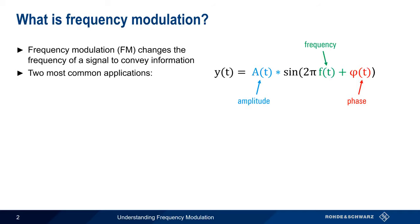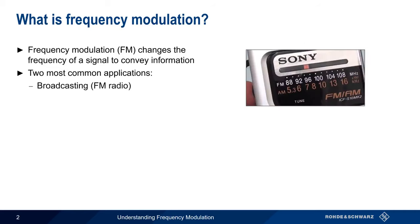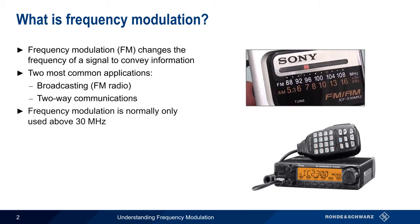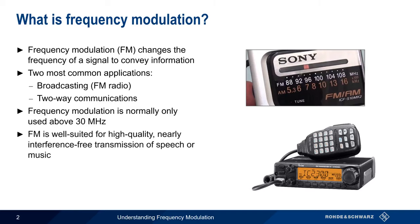The two most common applications of frequency modulation are commercial FM broadcasting, or FM radio, and local two-way communications. Because frequency-modulated signals require relatively wide bandwidths, FM is normally only used at VHF and higher frequencies – that is, at frequencies above 30 MHz. FM is almost exclusively used to transmit audio, either speech or music.